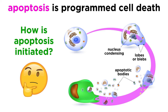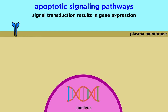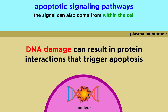In order to understand exactly how this all happens, let's examine the two ways in which apoptosis can be initiated. Signals can come either from outside of the cell or inside of the cell. If outside, nearby cells release signaling molecules that initiate signal transduction, resulting in the expression of genes whose protein products carry out apoptosis. Alternately, if the DNA within a cell becomes damaged beyond repair, a series of protein-protein interactions can act as a signal that triggers apoptosis.